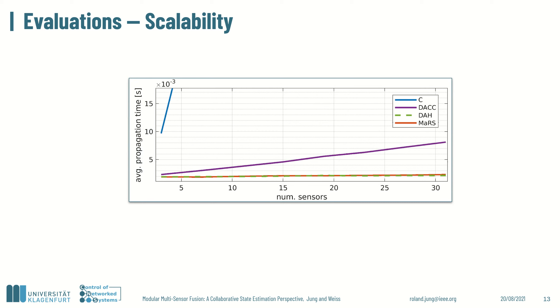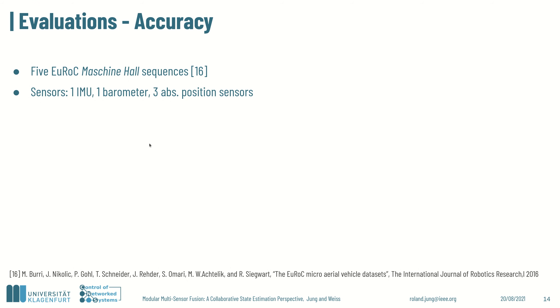This figure explains the reason. Delayed measurements enforce to redo all later measurements in order. As an IMU as propagation sensor was used, many propagation steps had to be repeated. Due to the correction buffer, DAH and MARS are in the propagation step invariant with respect to the number of known sensors while the effort increases linearly in DACC. Summarized, DAH scales better than DACC while DAH and MARS scale equally.